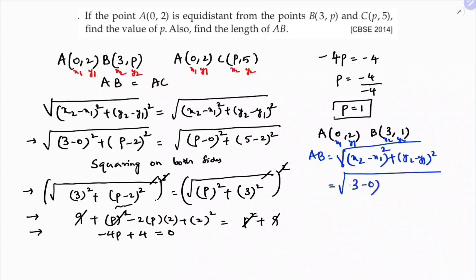So 3 minus 0 whole square plus 1. Y2 is 1 minus 2 whole square. So 3 minus 0 whole square is 3 square. 1 minus 2 is minus 1.